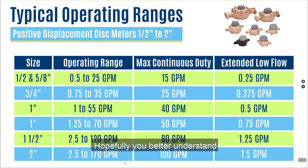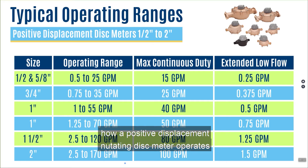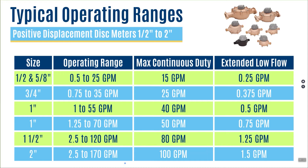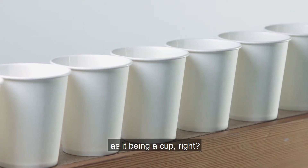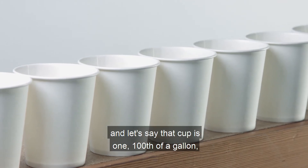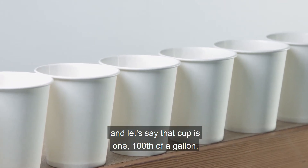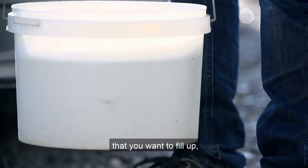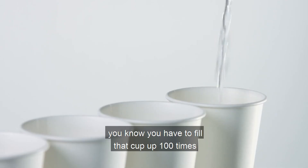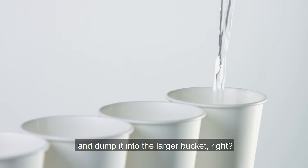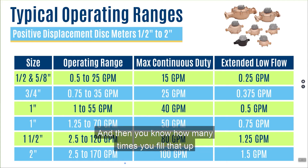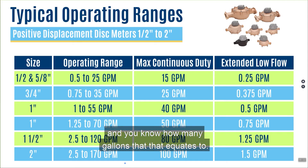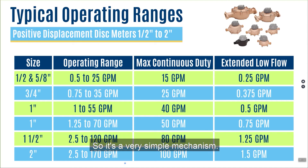Hopefully you better understand how a positive displacement nutating disc meter operates after watching that video. Another analogy: think of the internal chamber as a cup. If that cup holds one one-hundredth of a gallon and you want to fill a gallon bucket, you know you have to fill that cup 100 times and dump it in. That's how this chamber works — it's a known volume, and by counting how many times it fills, you know exactly how many gallons have passed through. It's a very simple mechanism.